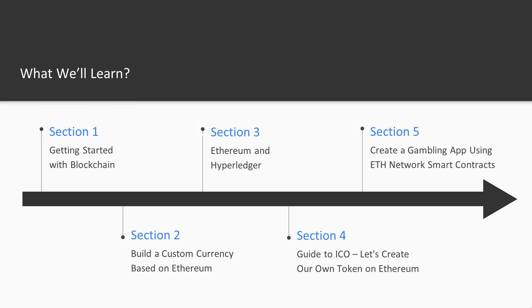In section three, we will create a decentralized application and briefly discuss what Hyperledger is and how it can solve problems for business needs. In section four, we will learn how to create an ICO — a crowd sale — how to create our own token on Ethereum using the crowd sale, and how to initiate the crowd sale. In the final section, we will create a gambling app using the Ethereum network.